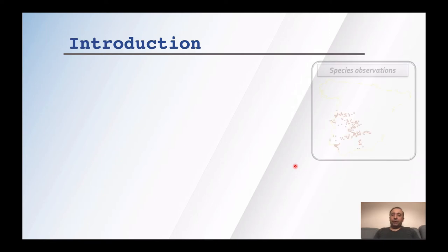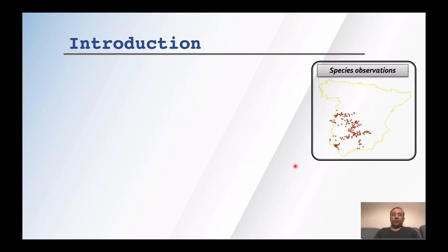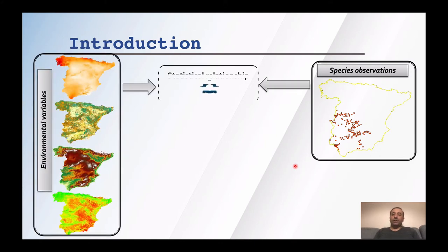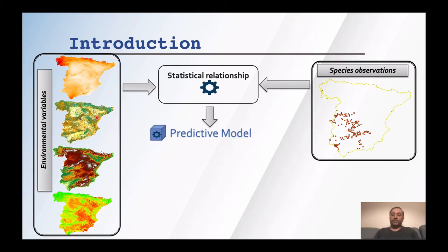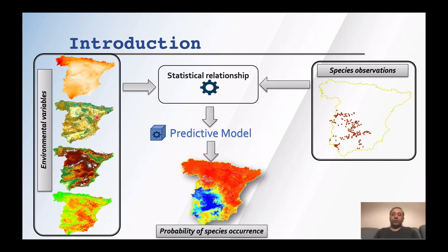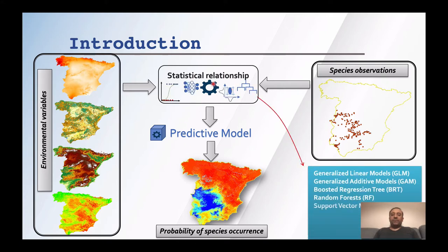In general, the procedure of developing a species distribution model starts with data — species observations and environmental variables. We then explore a statistical relationship between the response variable and predictor variables to produce a predictive model. We use this model to generate the probability of occurrence, predicting values in space or time. There are different approaches — regression methods or machine learning approaches —